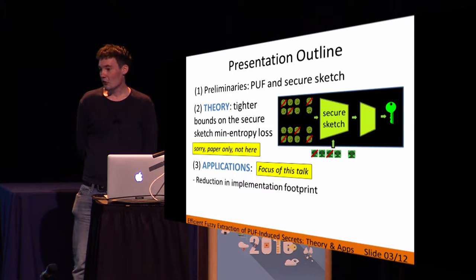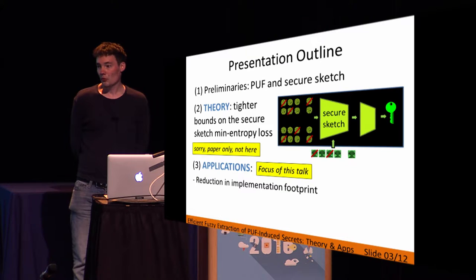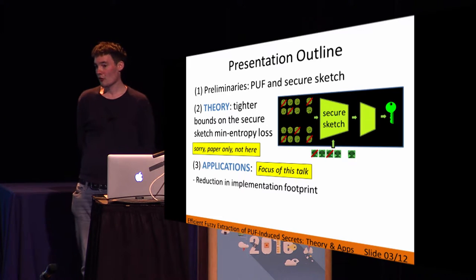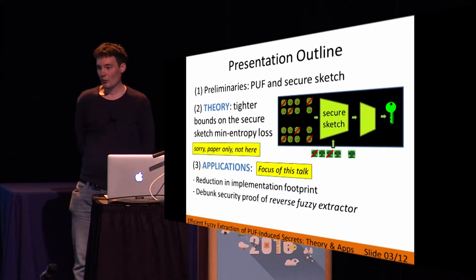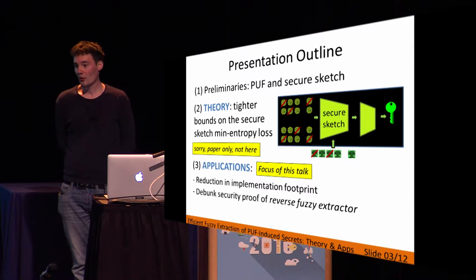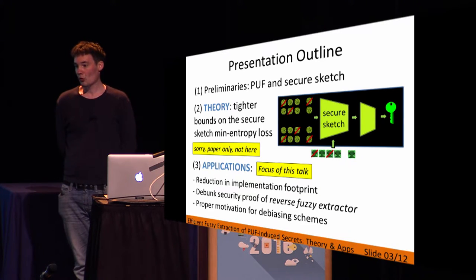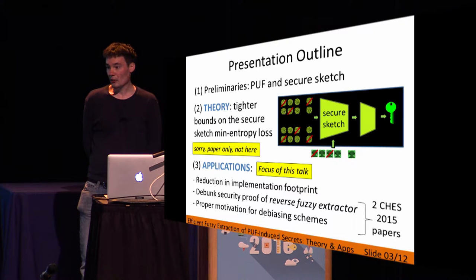The first obvious application of the theory is to reduce the implementation overheads of the fuzzy extractor — using less PUF bits and less helper data bits without changing the architecture. But there are other applications. In general, the theory is useful to analyze various error correction methods for PUFs. One application is that we can show there is a flaw in the security proof of the reverse fuzzy extractor. Third, we provide proper motivation for debiasing schemes, putting two papers from the last CHES edition in a somewhat different spotlight.